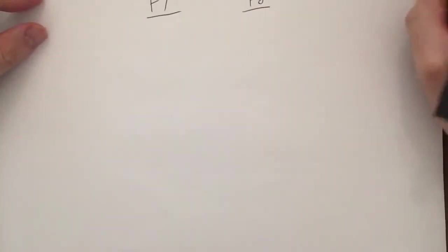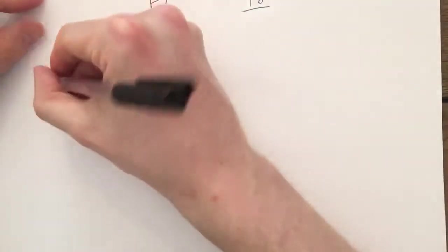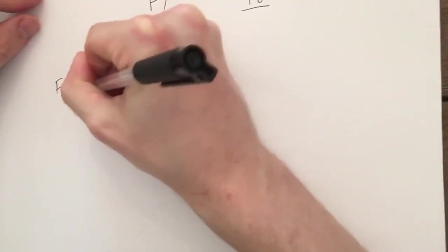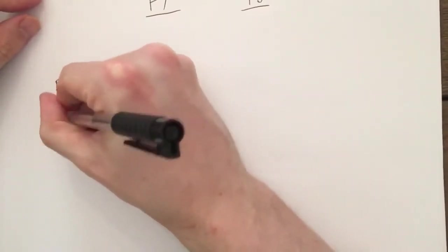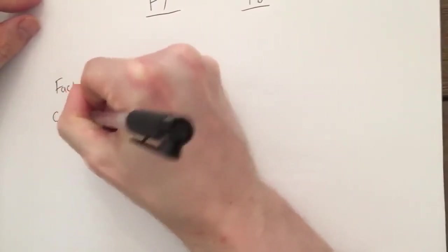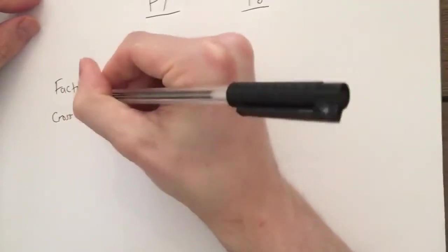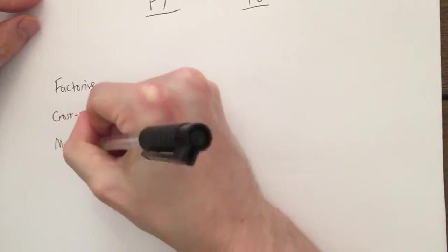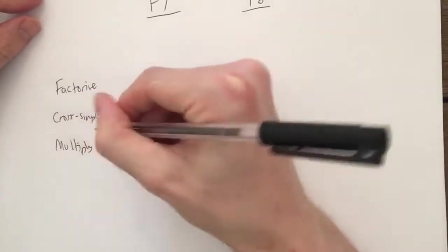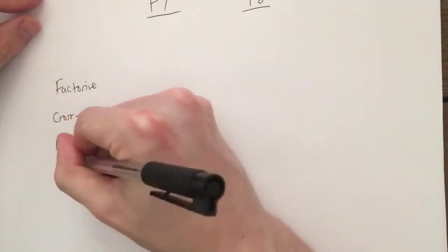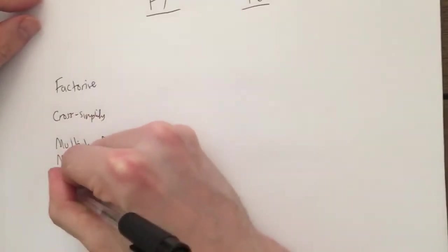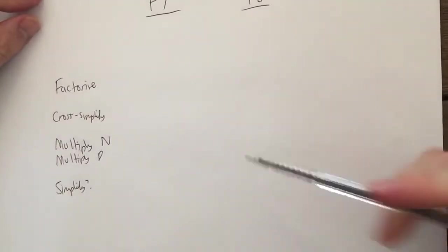We spoke about the first step being to factorize, the second step being to cross simplify all of this where possible. The fourth step was to multiply the numerator and multiply the denominator, and the fifth step was to simplify if you can at the end. Now that's completely correct for multiplying algebraic fractions.